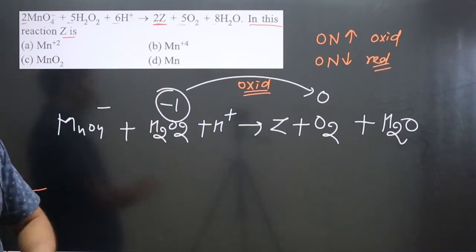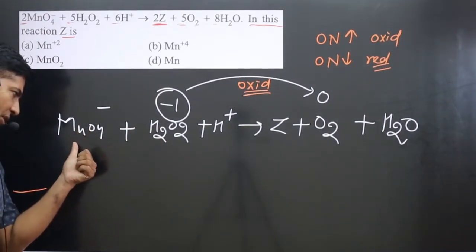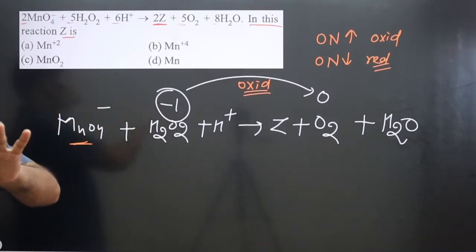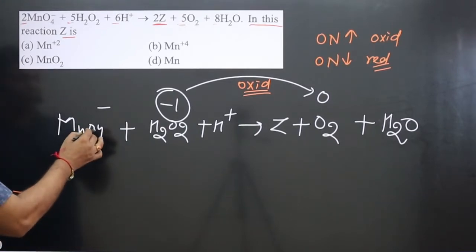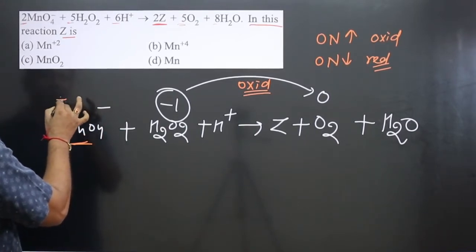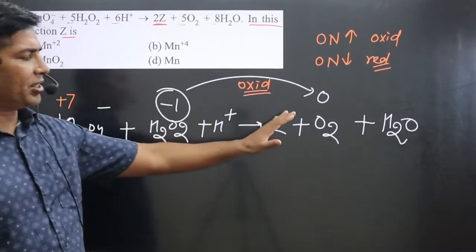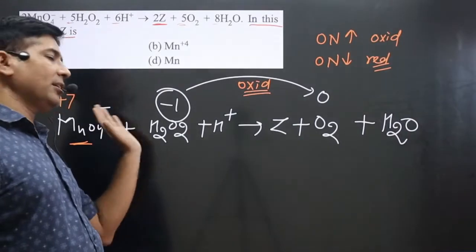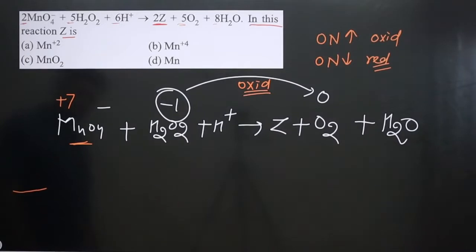Since hydrogen peroxide is the reducing agent, MnO₄⁻ must undergo reduction. If you calculate the oxidation number of manganese in MnO₄⁻: with oxygen at -2, manganese is in the +7 oxidation state. This is the highest oxidation number of manganese, so whatever species comes in place of Z must have a lower oxidation number than +7.